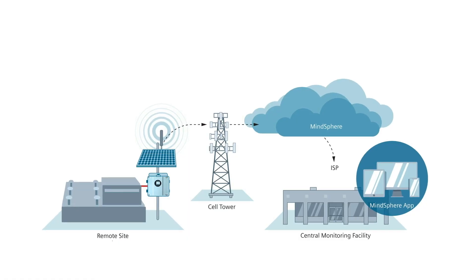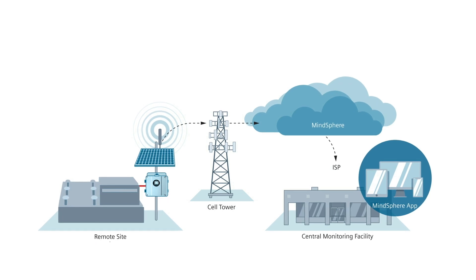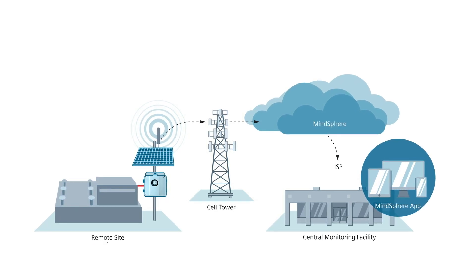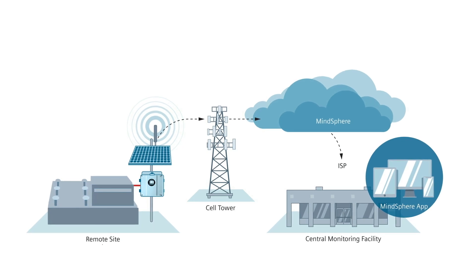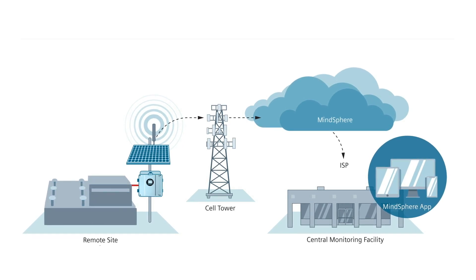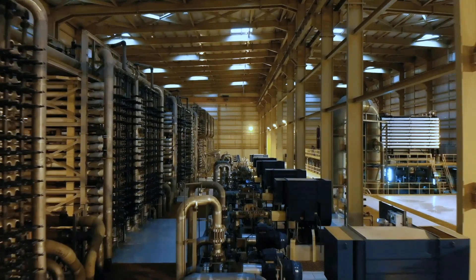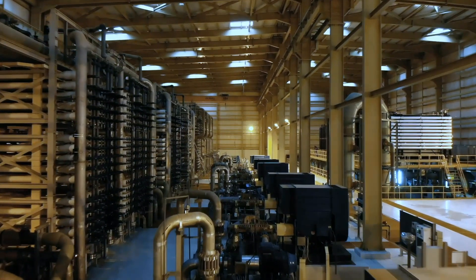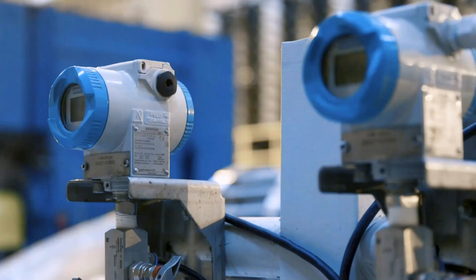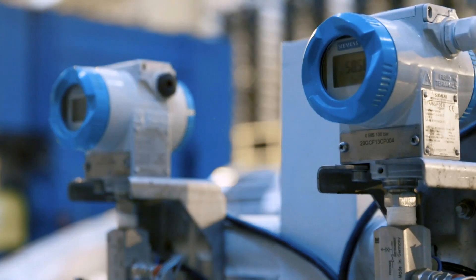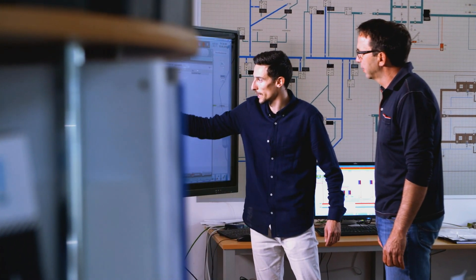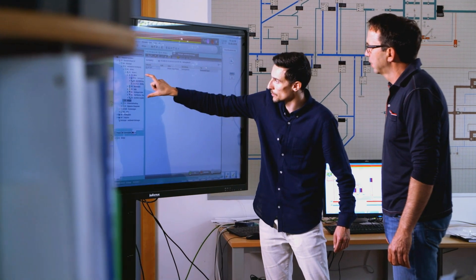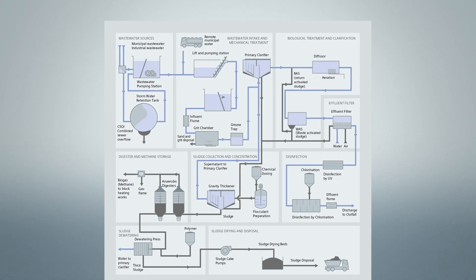If you have a wastewater treatment facility, you need monitoring of critical measurements like inlet flow, keeping track of chemical feeds in the disinfection cycle, or dewatering and treating the sludge. In the past, you could monitor measurements and the health of your process instrumentation by going into the facility and looking at individual instruments, or going into the control room to look at the various treatment stages — but it had to be done on site.